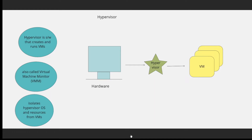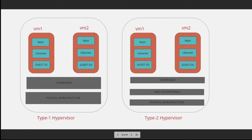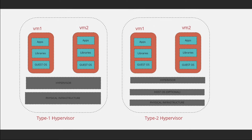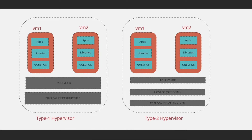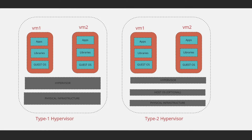Before going deeper, you need to understand an important concept called the hypervisor. A hypervisor is a piece of software that creates and runs virtual machines — it facilitates the creation of virtual machines. It is also called a virtual machine monitor. It isolates the hypervisor operating system and resources from the virtual machines. There are two types: Type 1 hypervisor runs directly on the host hardware — examples include KVM, Microsoft Hyper-V, and VMware vSphere.